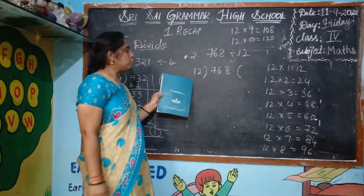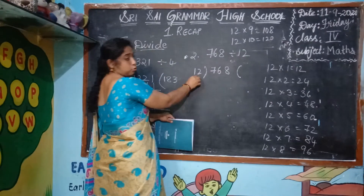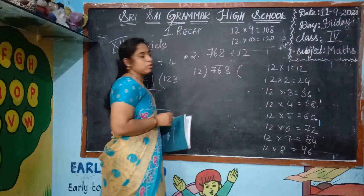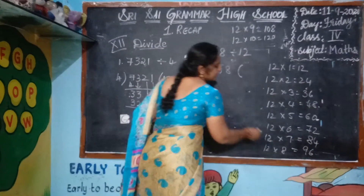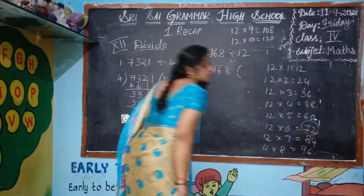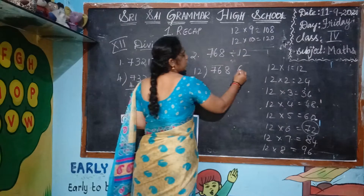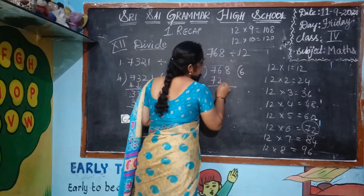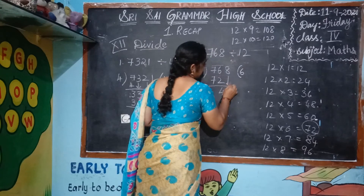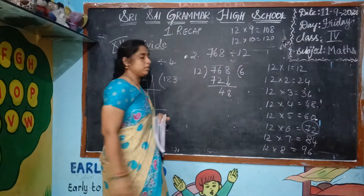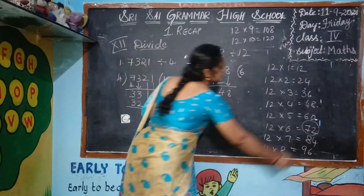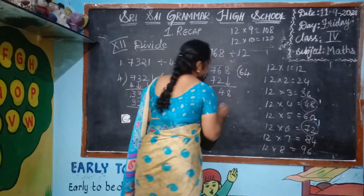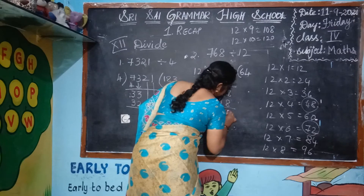Now coming to the 12 times table. First you have to take 2 digits — this is a 2-digit number. First you have to take 76. What is the nearest number to 76? 72. 12 sixes are 72. 6 minus 2 is 4, and the remaining 8 should be carried down. Now 48 — what is nearest to 48? 48 itself is 48. 12 fours are 48, and the remainder is 0.